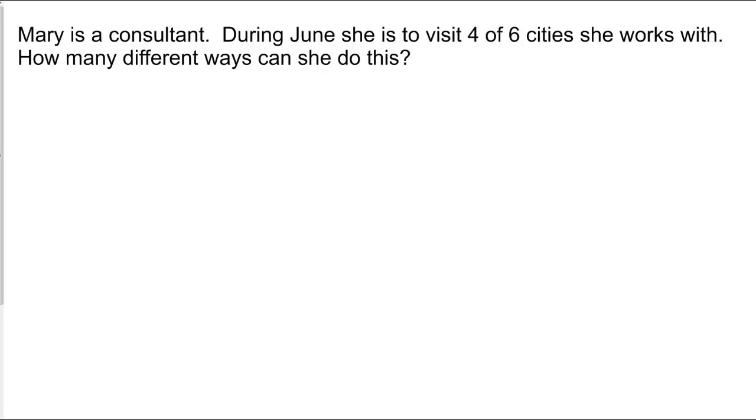Next, you've got Mary, who's a consultant, and during June, she visits four of six cities she works with, and you want to know how many ways that she can travel to these four of six cities. Well, again, that's permutation, because the order in which she travels to those cities is going to matter. So what we have is from 6 total cities, we're taking and arranging 4, so that's 6 arrange 4 in this case.